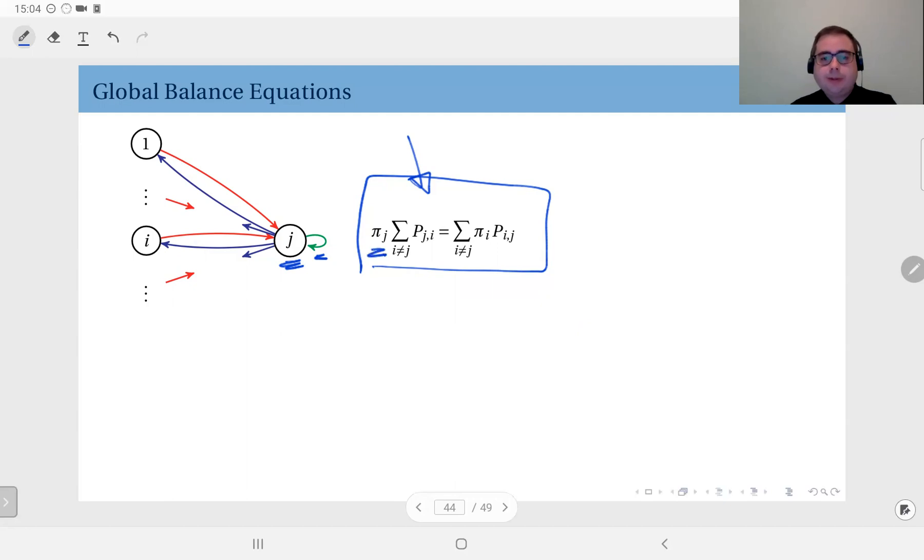What the global balance equations tell us is that if you take the probability of being in state j and multiply that with the outgoing probabilities pⱼᵢ's - these are the blue arrows - this is pⱼ₁, this is pⱼᵢ, this is pⱼ,ᵢ₊₁, however many states you have. This is the flux, the probability flux going outside state j.